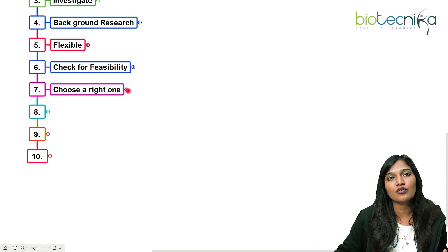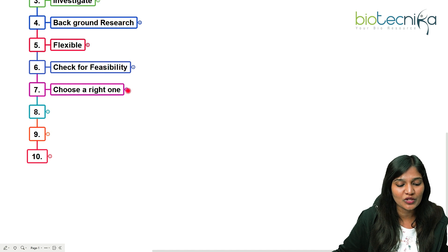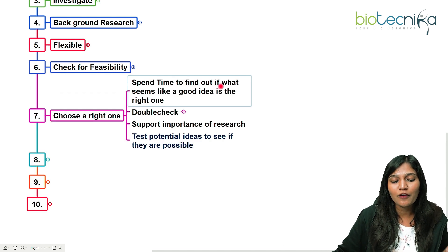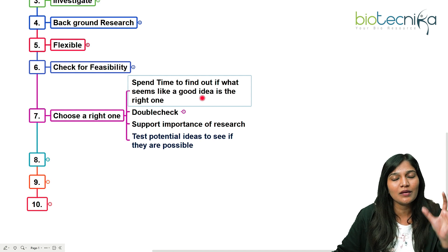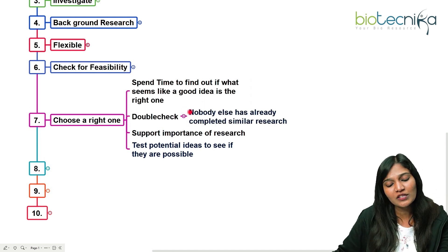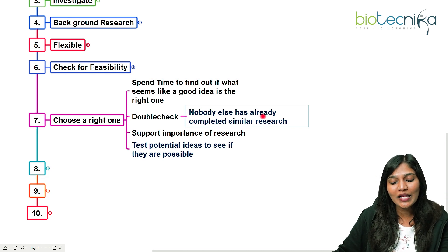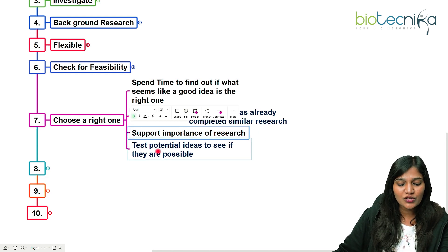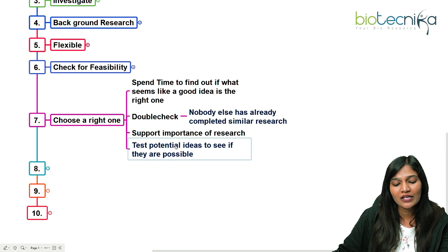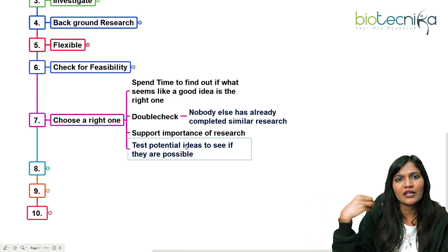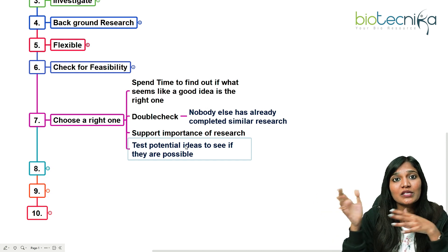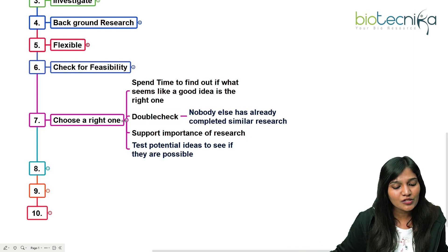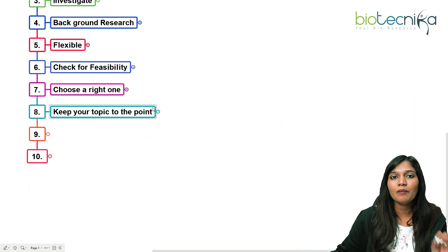The next tip is to choose the right one. Take a lot of time — don't be in a hurry. Spend time to find out if what seems like a good idea is actually the correct one. Always double-check that nobody else has already completed the same kind of research you're planning to do. Make sure your research has importance and uniqueness. Test potential ideas to see if they are possible — take ideas suggested by others and check whether they can be implicated in your context, because potential ideas can always be helpful.